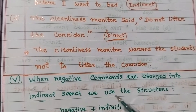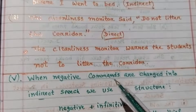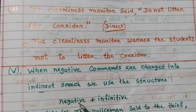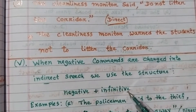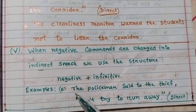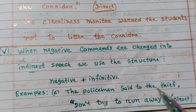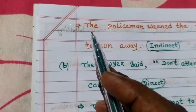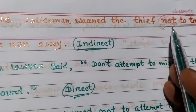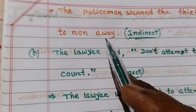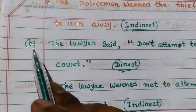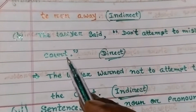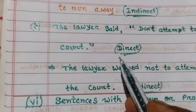Number five: when negative commands are changed into indirect speech, we use the structure 'not + infinitive'. Example A: Direct speech — 'The policeman said to the thief, don't try to run away.' In indirect speech: 'The policeman warned the thief not to try to run away.' Example B: Direct speech — 'The lawyer said, don't attempt to mislead the court.'